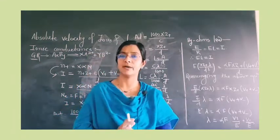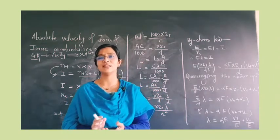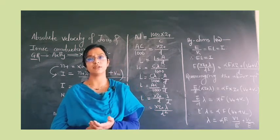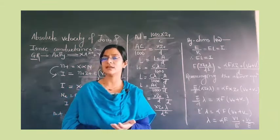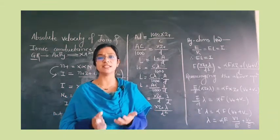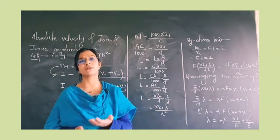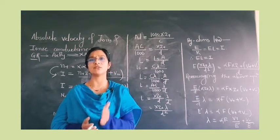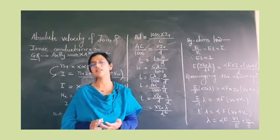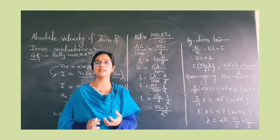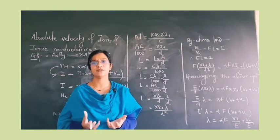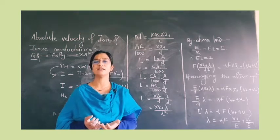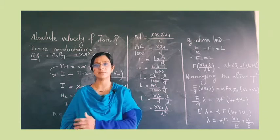Absolute velocity is the part where we measure the exact speed of the ions. To study absolute velocity, we should understand how much pressure is applied, how much temperature is applied, the nature of the ion, the nature of the electrolyte — whether it is weak or strong — as well as the potential drop applied. It is also important whether the ion is positive or negative. These are the factors responsible for the velocity of ions and their current-carrying capacity.